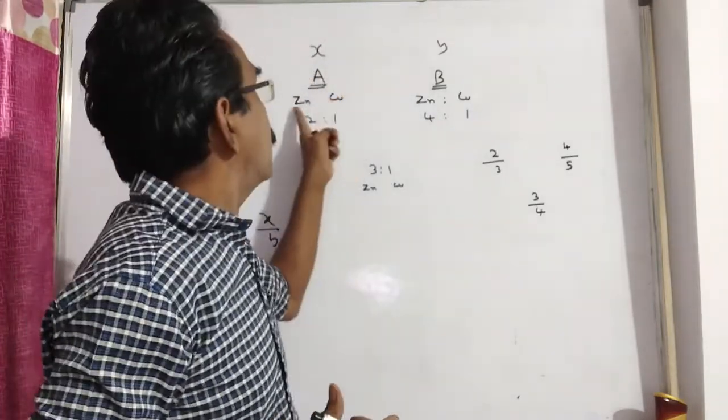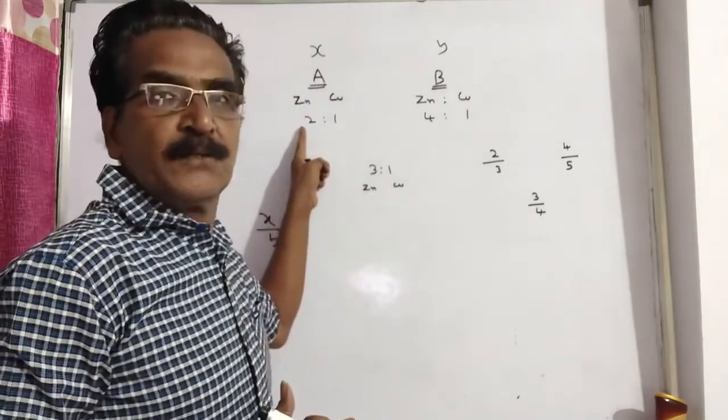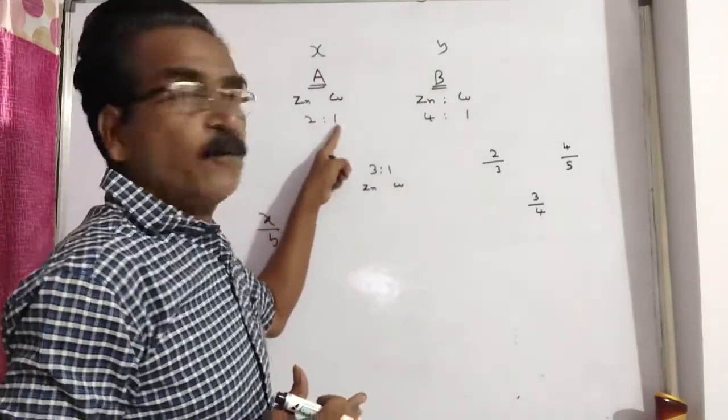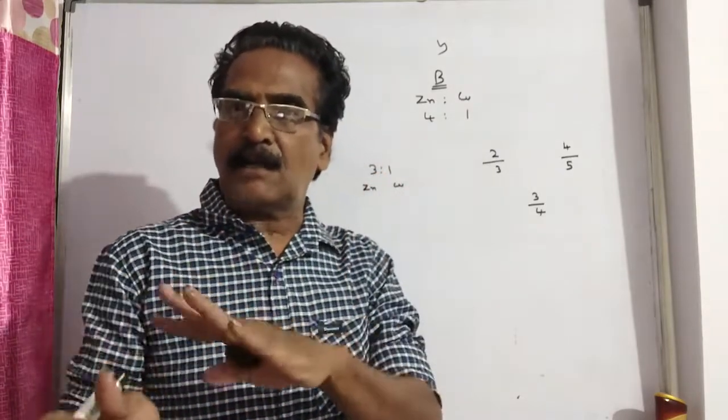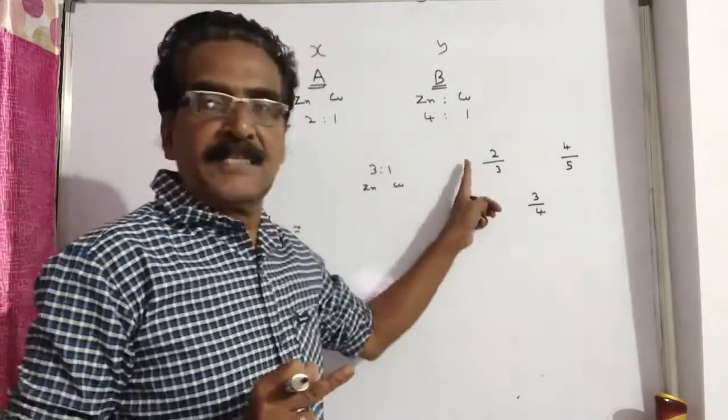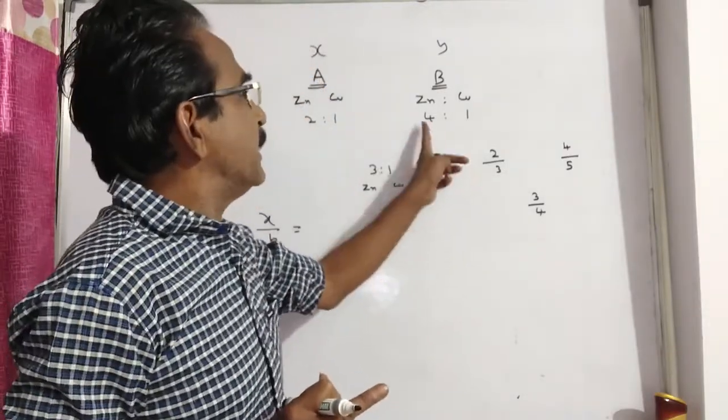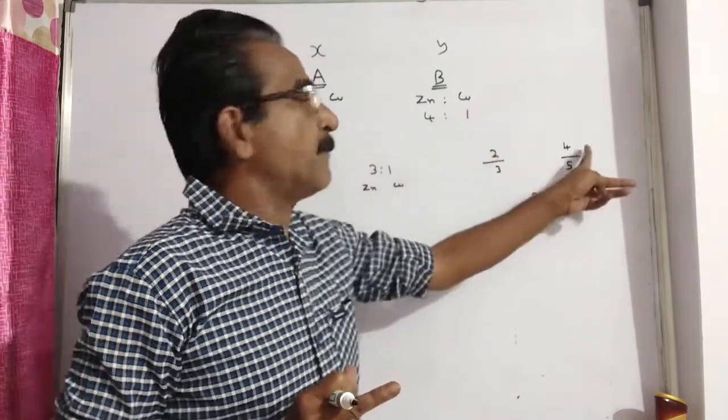Here in alloy A, zinc and copper are in the ratio 2:1. That means zinc is 2/3, copper is 1/3. I am considering zinc. You can consider either zinc or copper to apply rule of allegation. See friends, here I am considering zinc, 2/3. Here, zinc 4/5, copper 1/5. I am considering zinc.